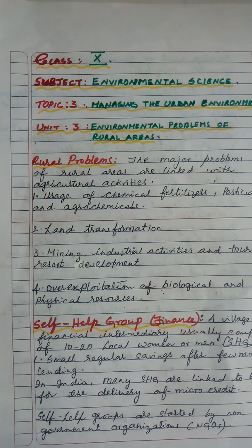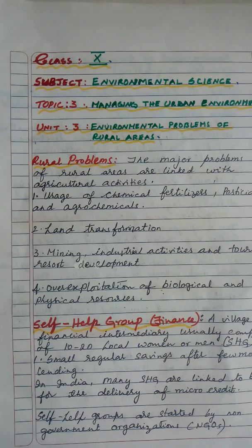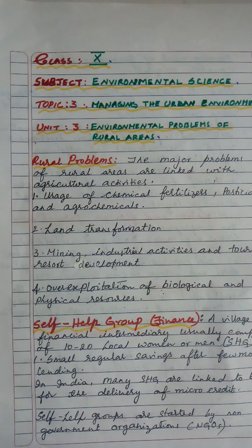Members take regular savings contributions over a few months until there is enough capital in the group. Once a sufficient amount is gathered, they start lending. Funds may then be lent back to the members or to others in the village for any purpose. In India, many SHGs are linked to banks for the delivery of micro credit — NABARD is one such bank.